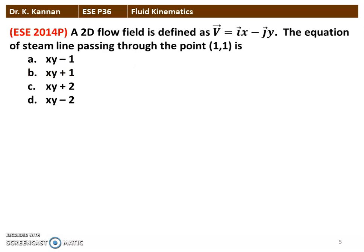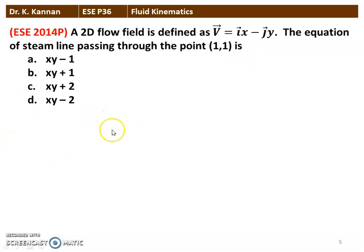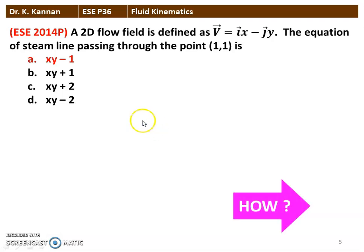The next question from the 2014 question paper: a two-dimensional flow field defined as V = iX - jY. The equation of the stream line passing through the point (1, 1) is — among the four options, the correct answer is XY - 1 = 0. The stream line passing through the point is XY - 1 = 0. We will see how in the next slide.